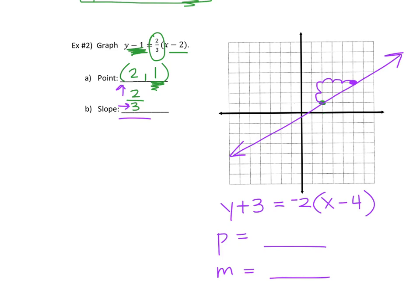What did you get for your point? The answer is (4, −3). Remember, this is x minus your x₁ value, and x always comes first when we name a point as (x, y). So positive four, then negative three for y. Plot (4, −3). The slope m is negative two. For a slope of negative two, you go down two and over one. From (4, −3), go down two and to the right one to get your next point, and that's your line.